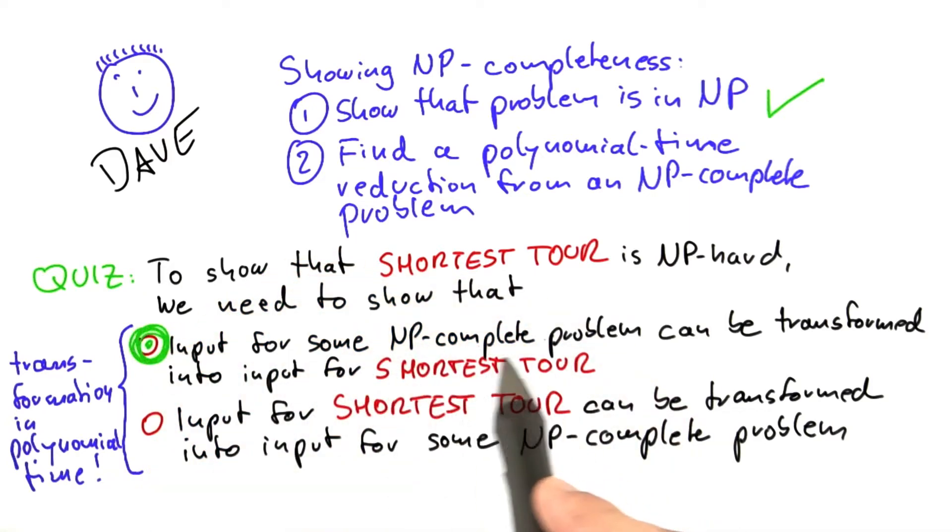Because as I told you, a reduction basically means that we show that this NP-complete problem here, and we still have to choose a good one, kind of fits into shortest tour. So shortest tour is at least as hard to solve as this one up here. If it were the other way around...